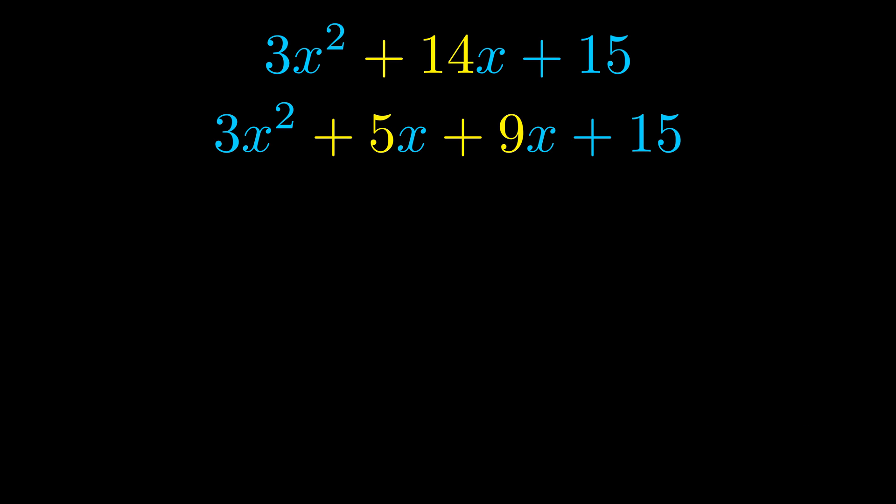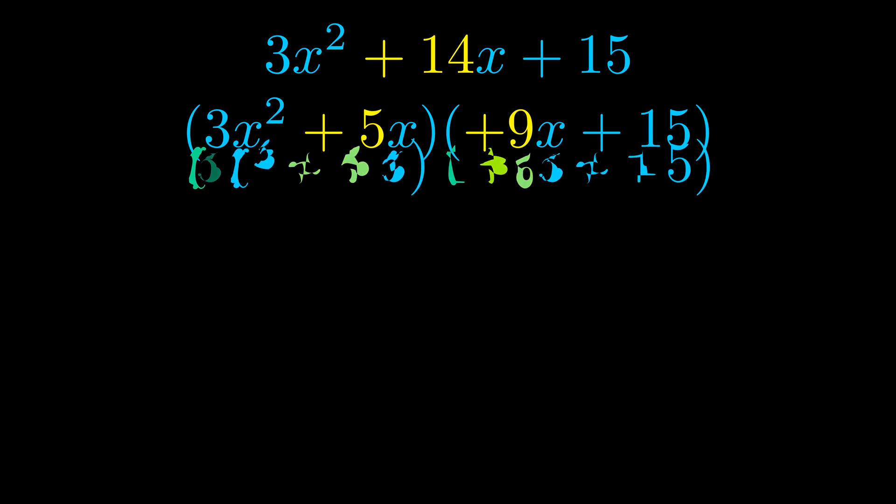Once we've done this, we go ahead and we put parentheses around the first term and the last term, and we do that so that we can take the greatest common factor out of both terms. We can see the greatest common factor is now outside in green. Notice also how what remains inside of the parentheses is the same in both cases. The blue values are the same.